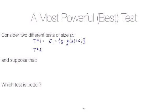And test number two will be critical region C2, and it will be the set of all vectors X such that some other function of X is greater than some other constant C2. And let's suppose that for both of these, the probability that X lands in the critical region